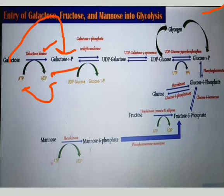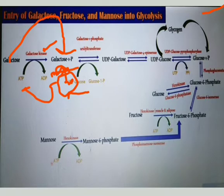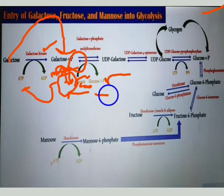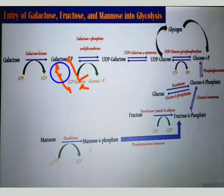Next, galactose-1-phosphate is converted into UDP-galactose. A molecule of UDP-glucose comes from within the cell. From UDP-glucose, the UDP molecule combines with galactose to become UDP-galactose. The remaining glucose molecule of UDP-glucose combines with the phosphate group and becomes glucose-1-phosphate. So the glucose becomes glucose-1-phosphate and the galactose becomes UDP-galactose.